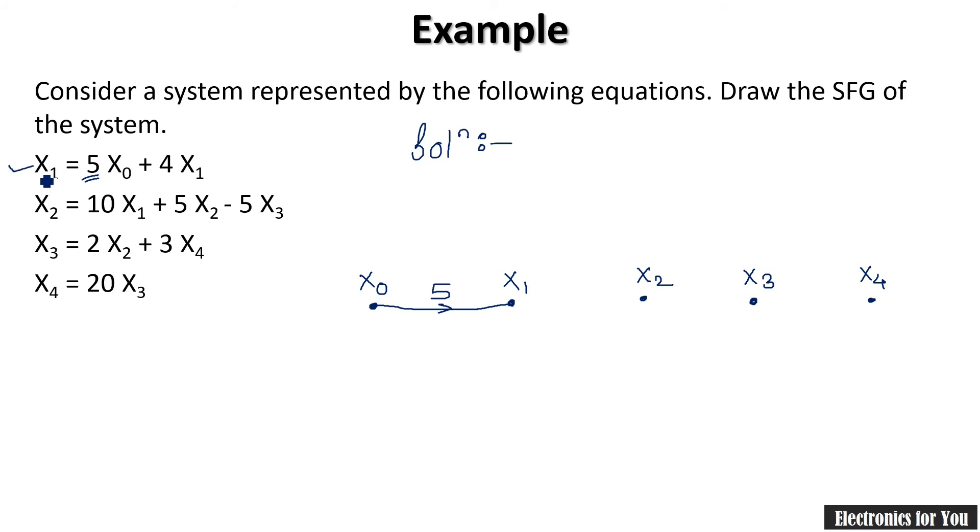Now plus 4x1 is there. See here that we are writing equation for x1 itself and we are moving to x1 itself, means this is nothing but a self-loop. So it is x1 and its gain is 4.